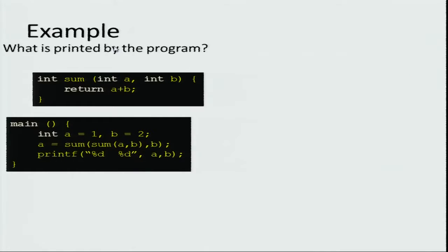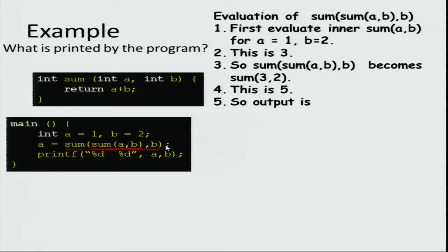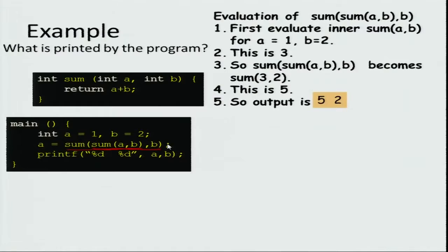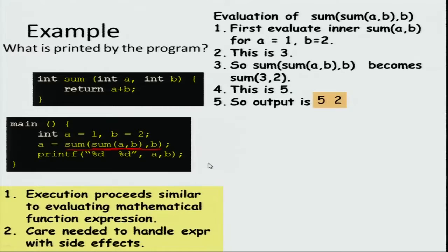Now let us try a slightly more elaborate program. What happens if you have sum of sum of a, b and then sum of that with b? First evaluate the inner function sum(a, b): a is 1 and b is 2, so that returns 3. Then you add b again — b is 2 — so you have 5 as the total sum. So a will be assigned 5 and b is still 2. This is similar to evaluating a normal mathematical expression.